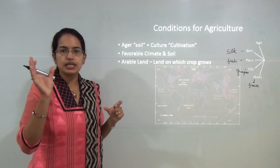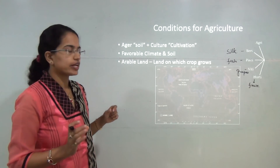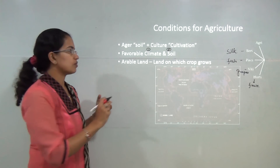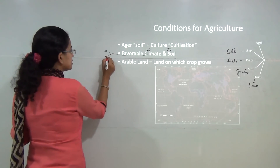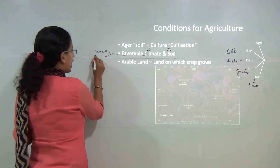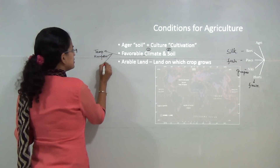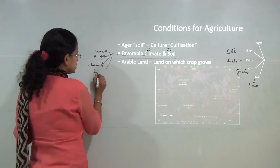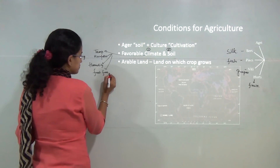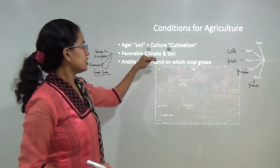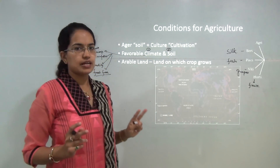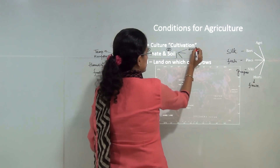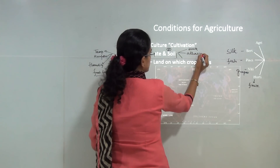The primary prerequisite condition for agriculture to develop is first the climate and secondly the soil. Under climate, we classify temperature and rainfall, and also consider humidity and frost-free days — which is important for cotton cultivation. Under soil, there are various kinds: black soil, red soil, alluvial soil, loamy soil, and so on.